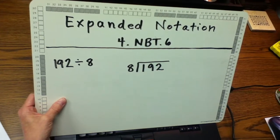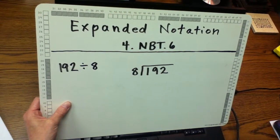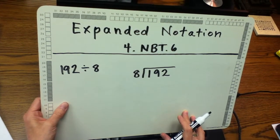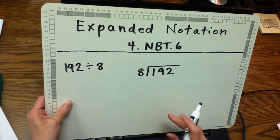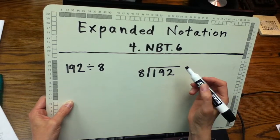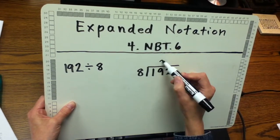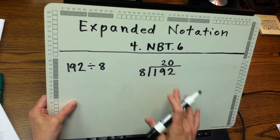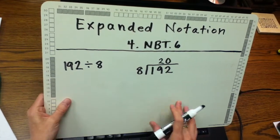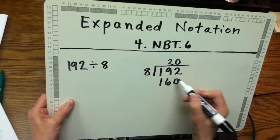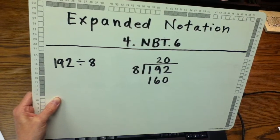I think about what number times 8 would give me an answer close to 192 without going over. I know that 20 times 8 is 160, so 20 gives me an answer close to 192 without going over. I'm going to write 20 above the bracket, then multiply 20 times 8 and write the product 160 below the 192.